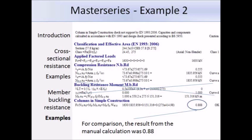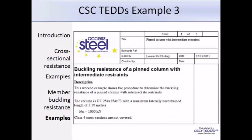Now here's the last example in this session on compression members. Using CSE TED software, we're going to determine the buckling resistance of a pinned column with intermediate restraints. We'll use a 254 x 254 x 73 UC with a factored compression design load of 1000 kN and a maximum laterally unrestrained length of 3.5 metres.